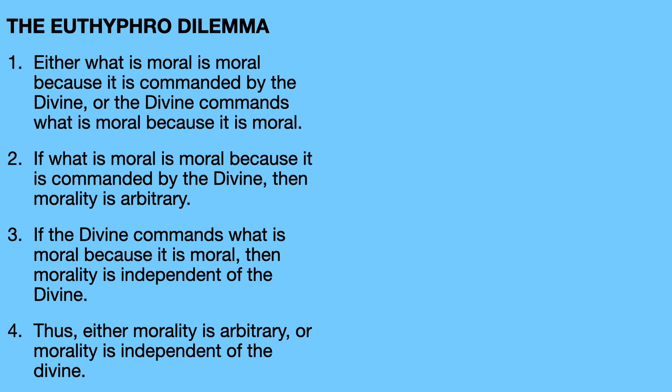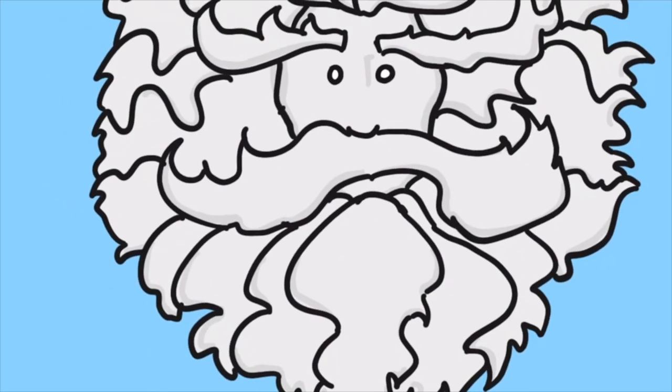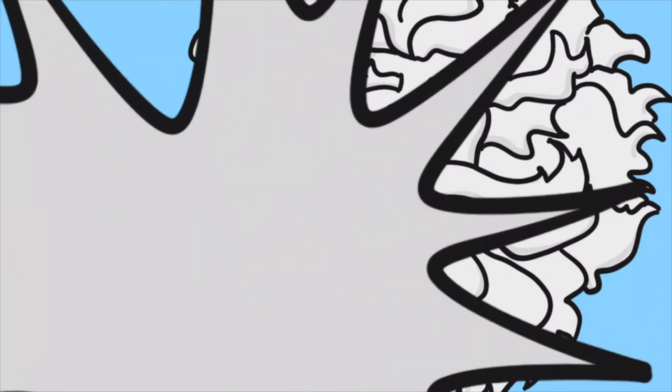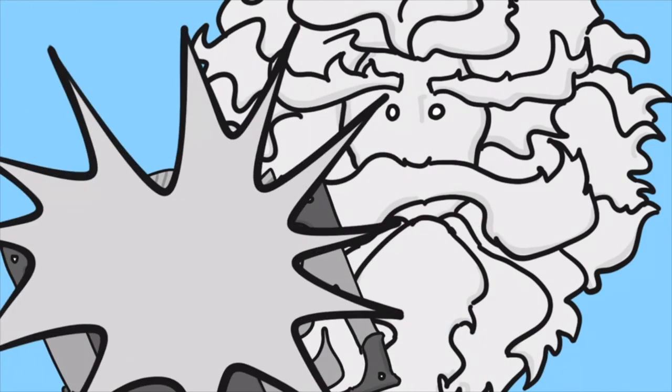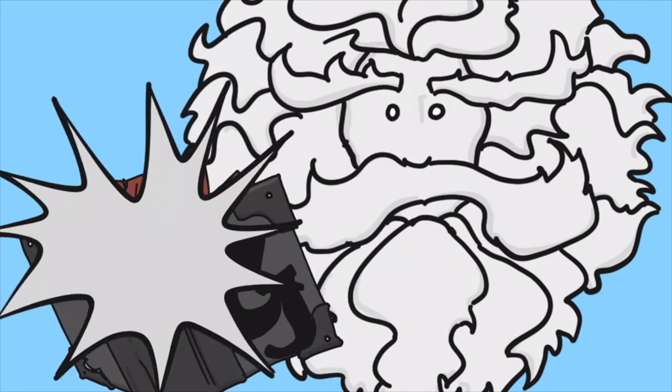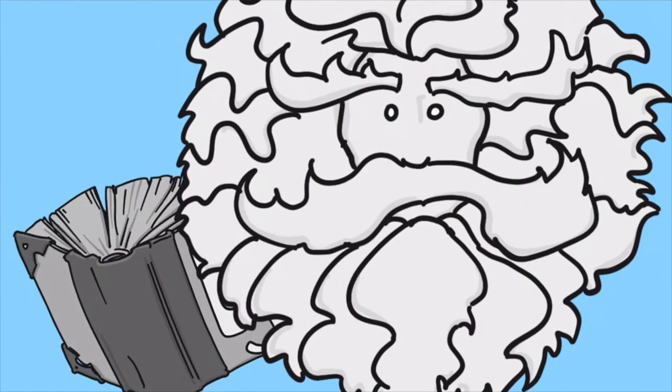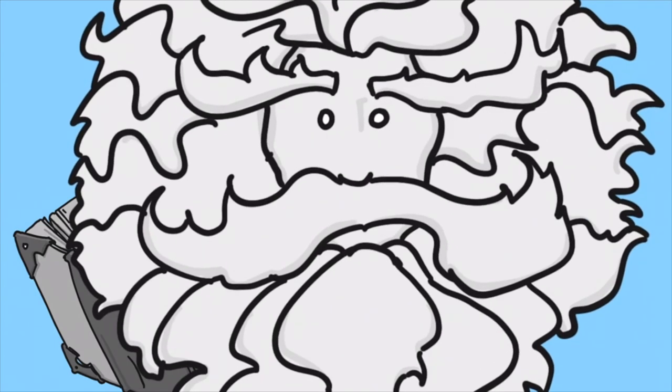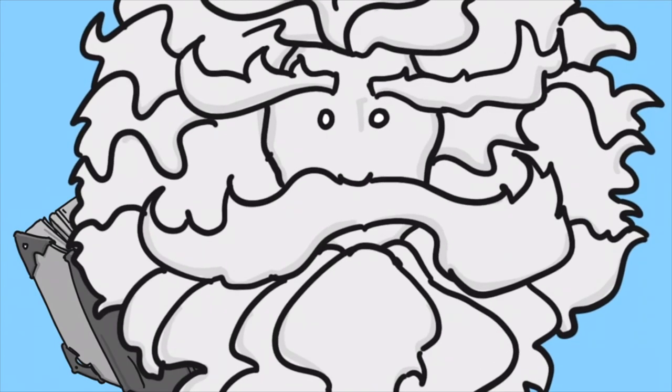But a word of caution. There are more consequences to follow each horn than you might realize. The first horn tells us that what is moral is moral simply because of divine command. And a consequence of this is that morality could have just been anything, hence morality is arbitrary. Well, a further consequence of this is, there's a divine. If there's a divine command, there's a divine.